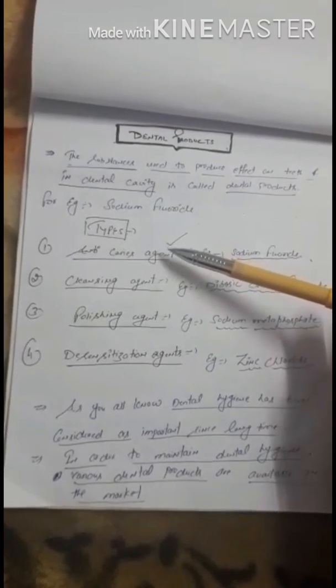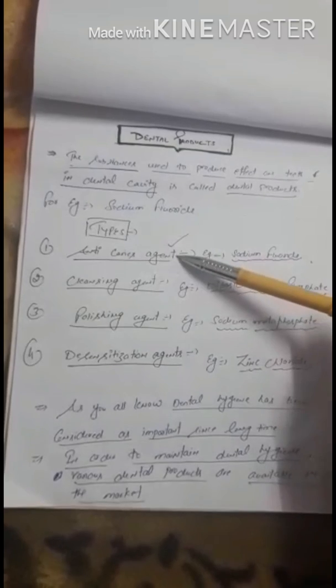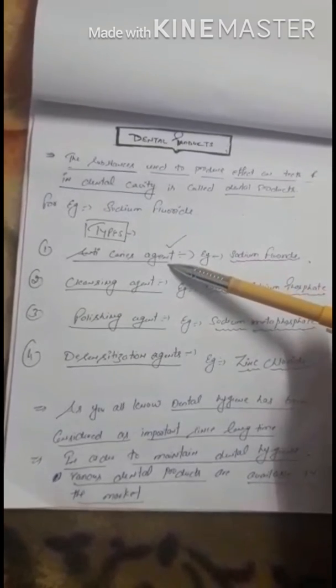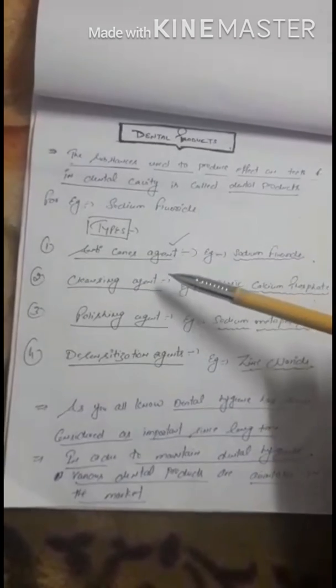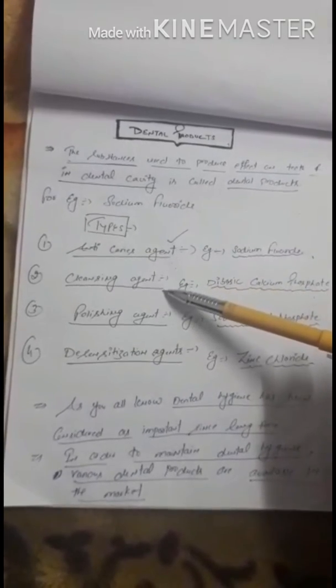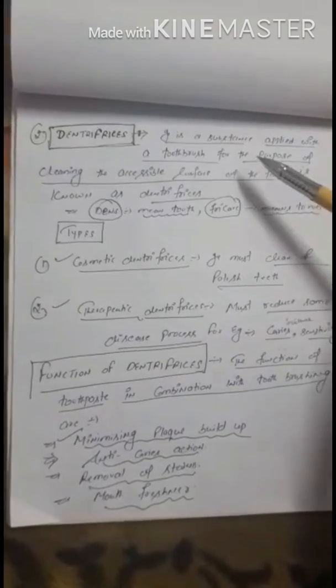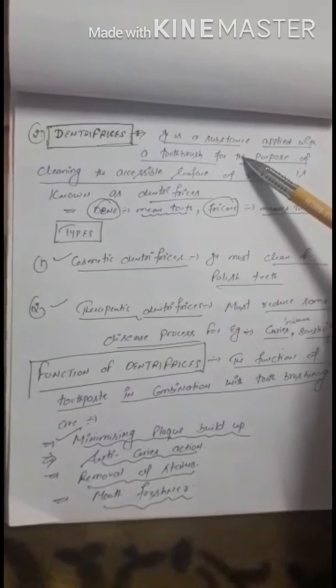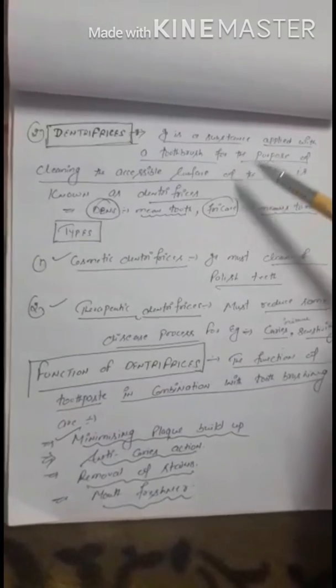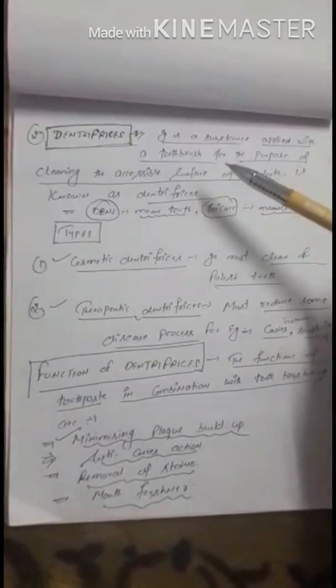Now moving to its types — the classification of dental products. There are various categories of dental products. The first category is anti-caries agent, which means to prevent tooth decay or dental caries; example: sodium fluoride. The second category is cleansing agent — dentifrice. These are substances applied to a toothbrush to clean the accessible surface of the teeth.